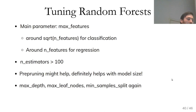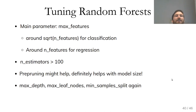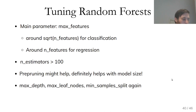The main parameter is max_features in scikit-learn — the number of features tried at each split. For classification it's typically the square root of the number of features; for regression it's around the total number of features. Setting max_features=n_features means considering all features at each split (no randomization). Setting max_features=1 means picking one random feature per split, which can result in very deep trees since the random feature may not be informative.